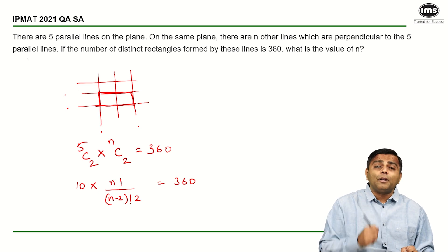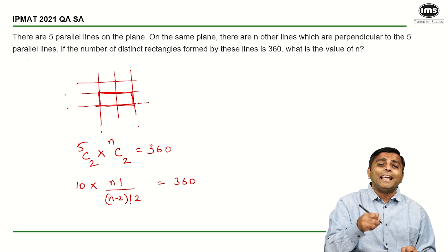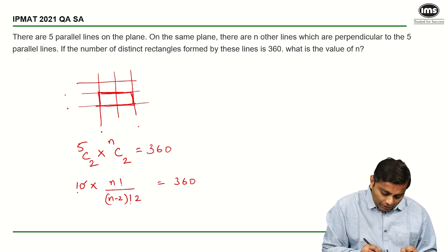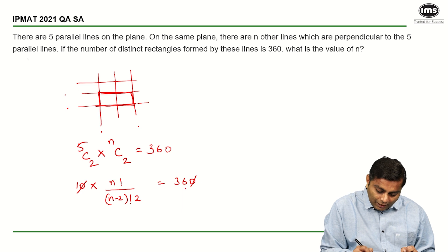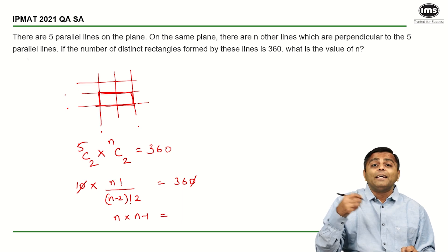Now, N factorial upon N minus 2 factorial, on the numerator you are left with N into N minus 1. You can cancel 10 with the 0 here. And the 2 can go there to become 72. So what you are left with is N into N minus 1 is equal to 72.